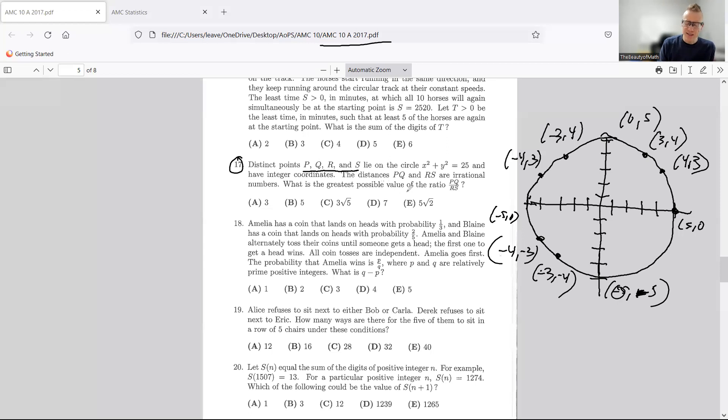So the distances—it says PQ and RS are irrational numbers. What is the greatest possible value of the ratio PQ (which is the length of PQ) over RS, greatest possible value? So all we have to do is pick these points. We're trying to maximize value. So you ask yourself, what does that mean? How can I maximize value? Let's say that you're at 8/3. How would I make it larger? Well, one way would be to make the numerator larger. I could also make the denominator smaller. 8/1 is greater than 8/3, and 10/3 is more than 8/3. So there's two things we can do to maximize this ratio.